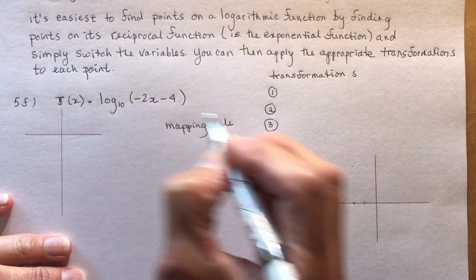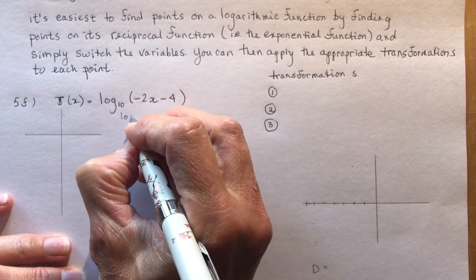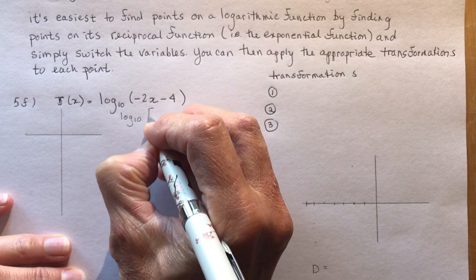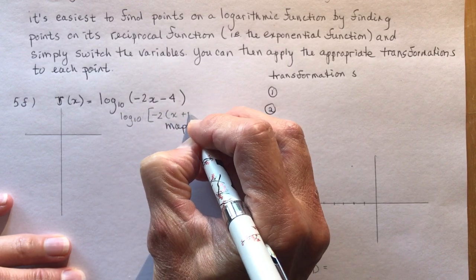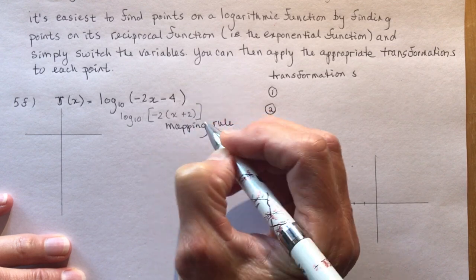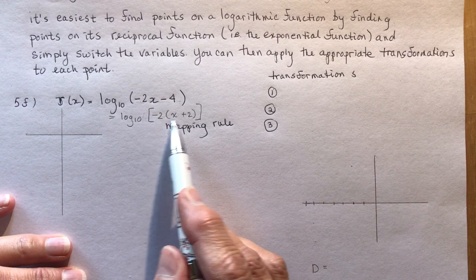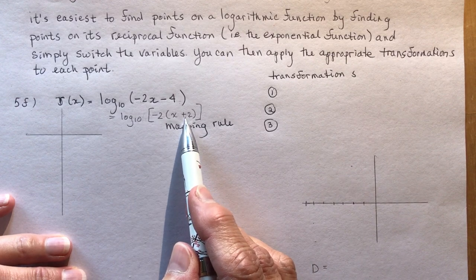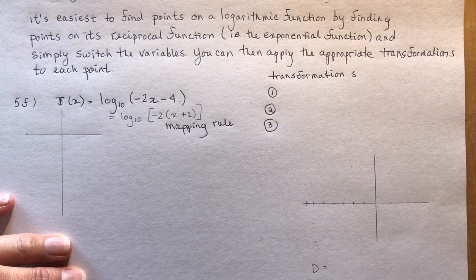So this is equal to log base 10 square bracket and I'm going to factor out a minus 2. So this is the transformation that I want to apply to the function and the function is going to be 10 to the X.